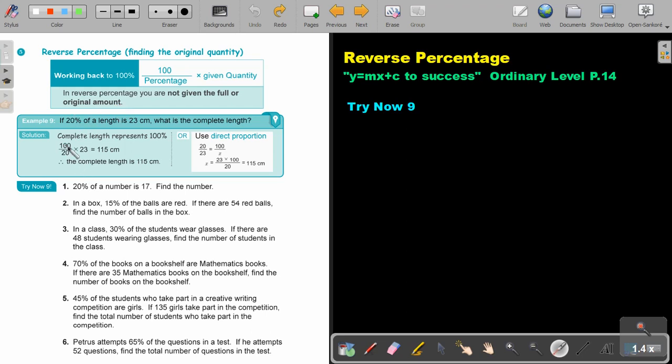Okay, let's look at an example. If 20% of a length is 23 centimeters, what is the complete length? So basically I am going to put the 100% on top over the 20 and I multiply it by 23 and I just get 150. You can actually test it by saying 20 over 100 multiply 115 and that will give you 23. You can also use direct proportion. So 20% is going to represent 23 and I want 100%. Then you can cross multiply and you can find the answer.